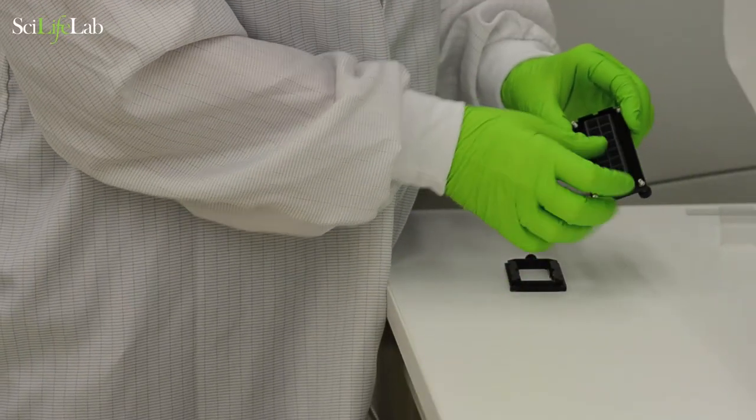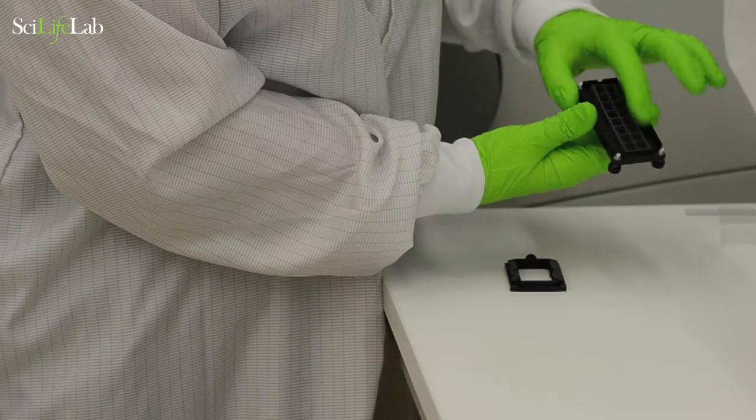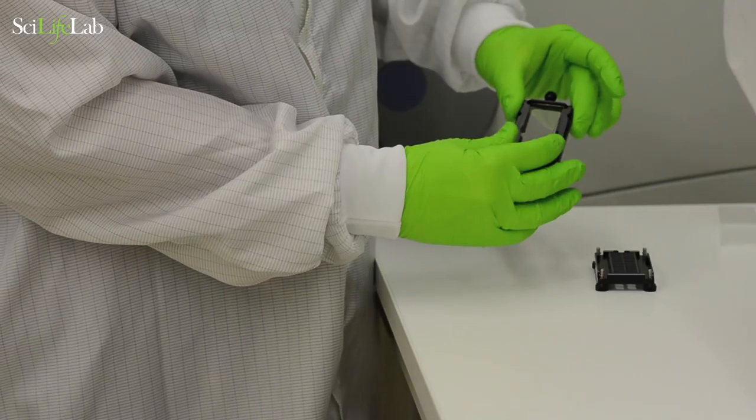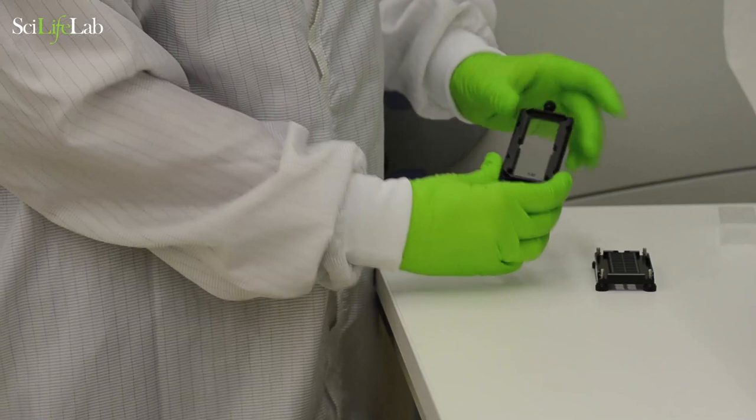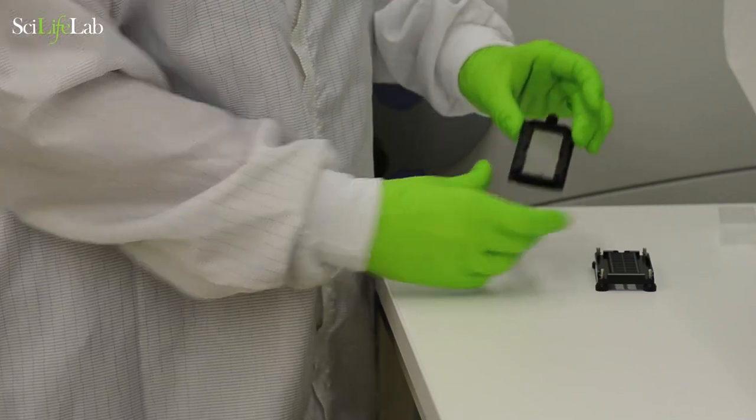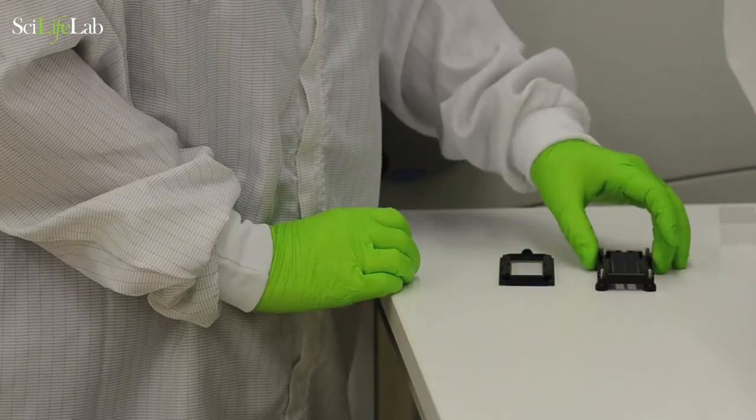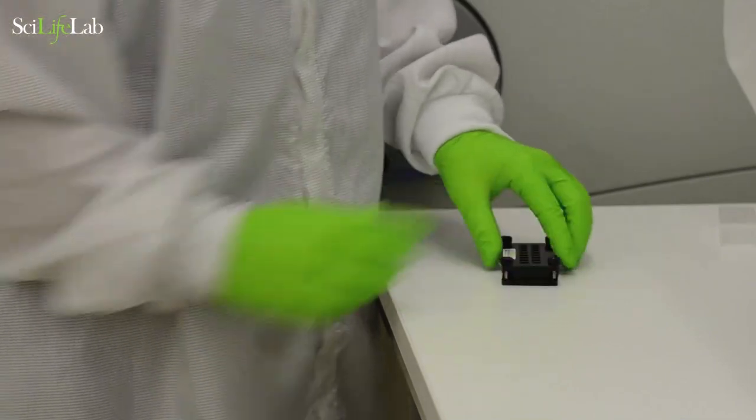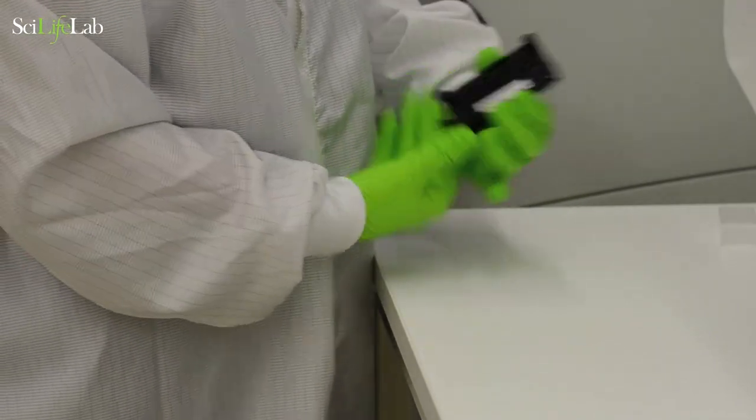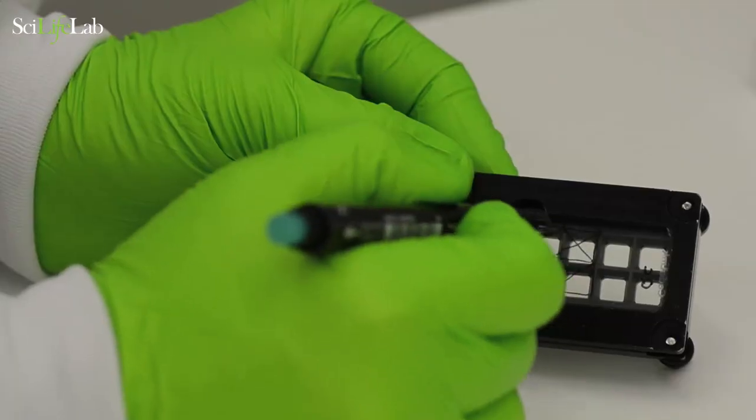Assemble the microarray cassette and attach the glass slide. Mark the back side of the glass to show where to attach the tissue sections.